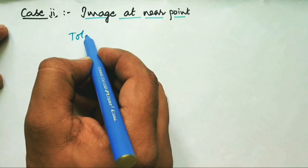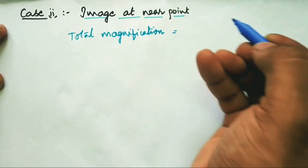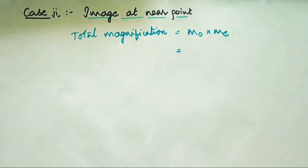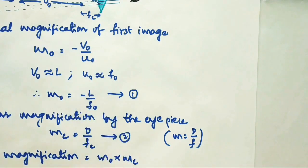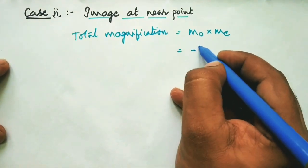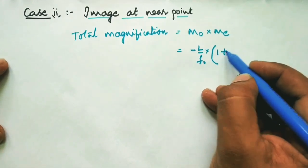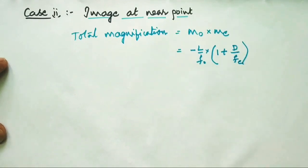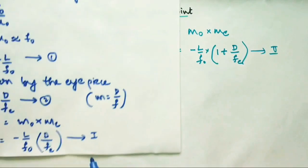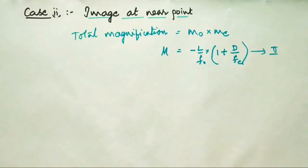Now let us see the second case: image formed at the near point. The total magnification is the product of the magnification produced by the objective and the magnification produced by the eyepiece. m_o remains minus L/f_o. For the eyepiece, since the image is formed at the near point, the simple magnifier formula gives (1 + D/f_e). So the total magnification becomes M = −(L/f_o) × (1 + D/f_e). The only difference from the infinity case is that D/f_e becomes (1 + D/f_e).